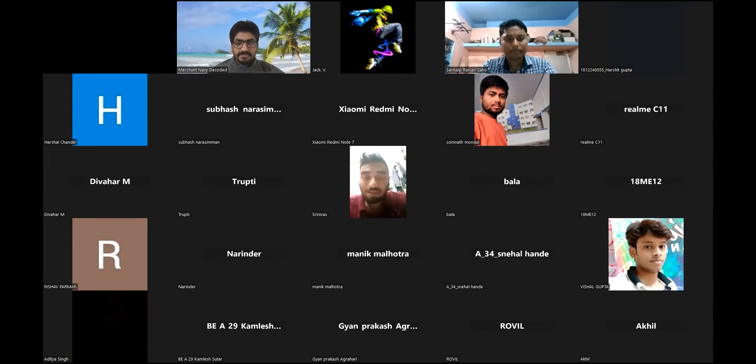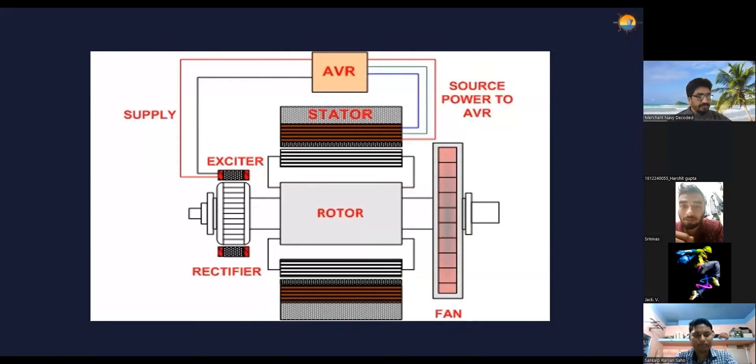Sir, I was asking, you told about that AVR. So while the initial startup of the generator, the AVR won't be giving any DC current to the exciter. So at that time, how can that small DC current in that exciter be given?